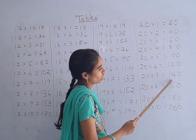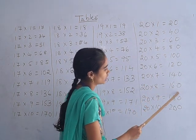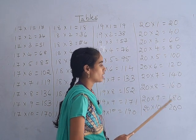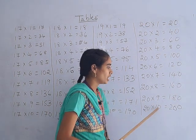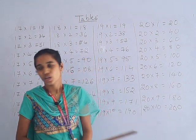20 sevens are 140, 20 eights are 160, 20 nines are 180, 20 tens are 100 and sorry, 200.